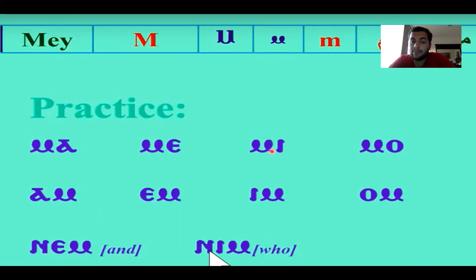MA, ME, MI, MO, AM, EM, IM, OM. You have NEM and you have NIM.